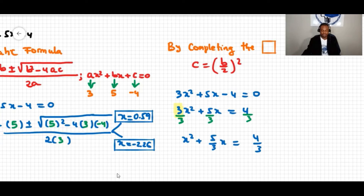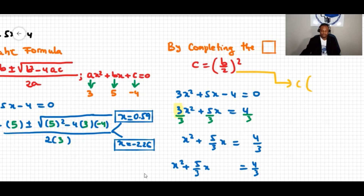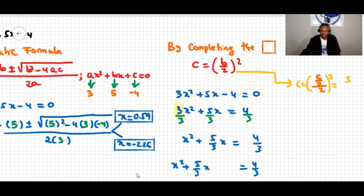After dividing by 3 we have x squared plus five-thirds x equals four-thirds. To complete the square we need to find a value c, which equals b over 2, squared. Here b is the coefficient of x, which is five-thirds, so c equals five-thirds over 2, which is five-sixths, squared.